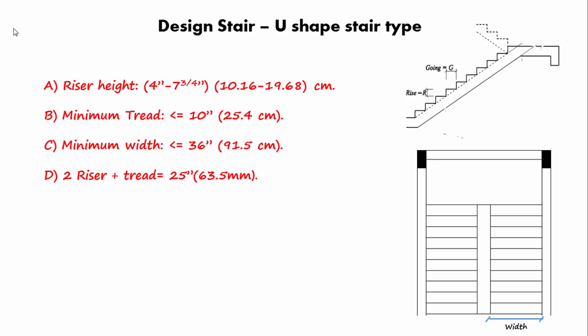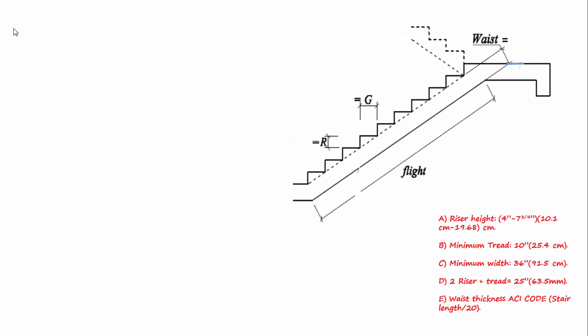Finally, waist thickness should be, according to American Concrete Institute codes, equal to the length of the stair divided by 20. Now we will start designing our U-shaped stair.